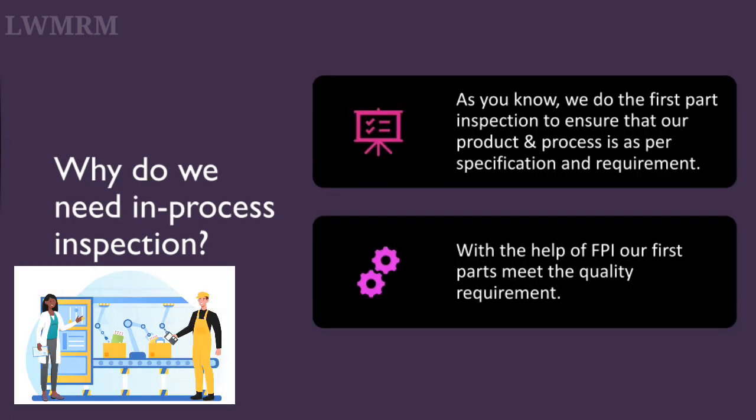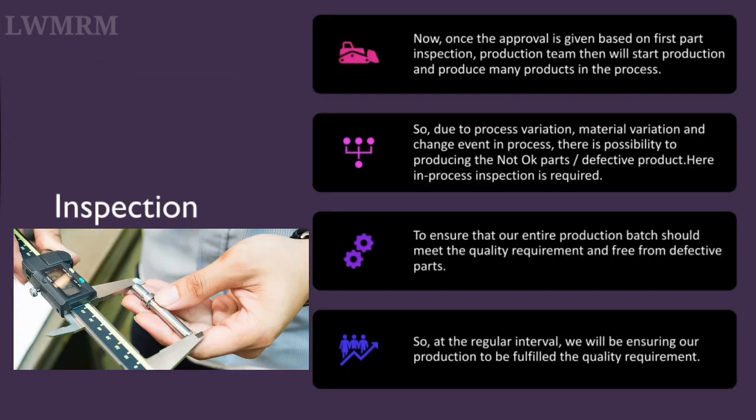Why do we need in-process inspection? We do the first part inspection (FPI) to ensure that our product and process is as per specification and requirement. With FPI, our first parts meet the quality requirement. Once the approval is given based on first part inspection, the production team will start production and produce many products. Due to process variation, material variation, and change events in the process, there is a possibility of producing not-okay or defective parts. Here, in-process inspection is required to ensure that our entire production batch meets the quality requirement and is free from defective parts. At regular intervals, we will be ensuring our production fulfills the quality requirement.